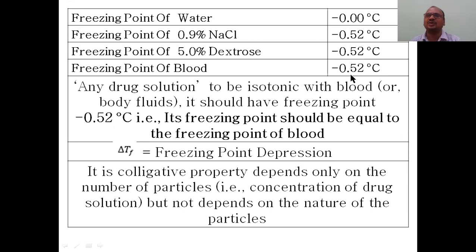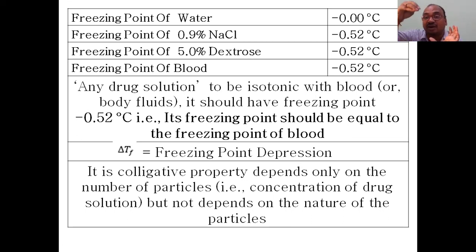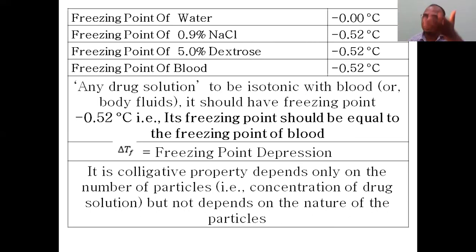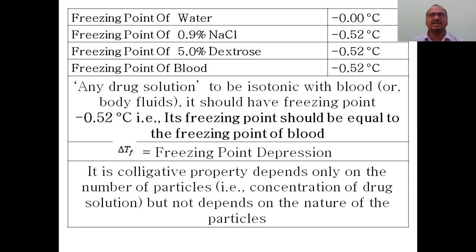To go from 0.0°C to minus 0.52, you just add salt — the freezing point will be depressed gradually: 0.1, 0.2, 0.3, and so on. This is a colligative property. When you add a salt or any solid substance to a liquid, the freezing point of the liquid decreases. At 0.9% NaCl concentration, it exactly matches minus 0.52 degrees centigrade — that is the key concept.